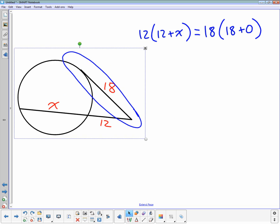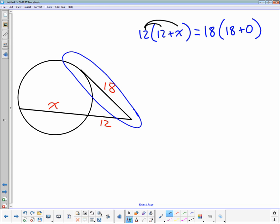We distribute. 12x plus 144, and 18 times 18 is 324. 12x equals 180, so x equals 15.